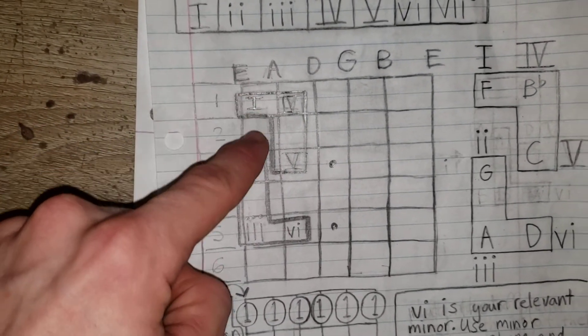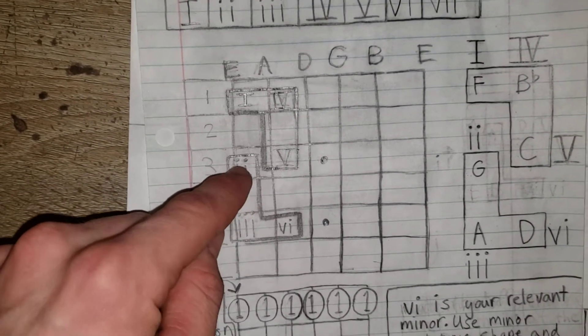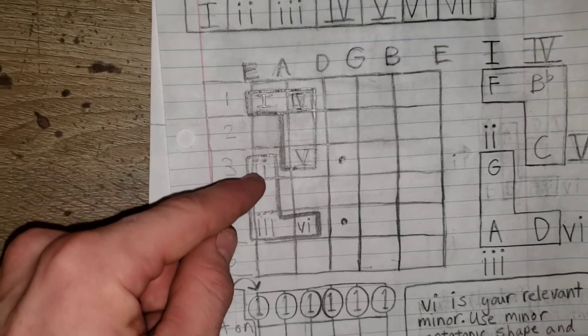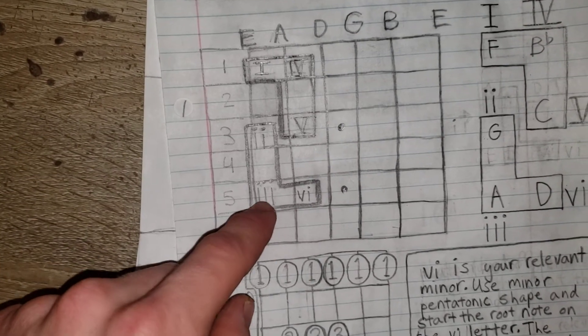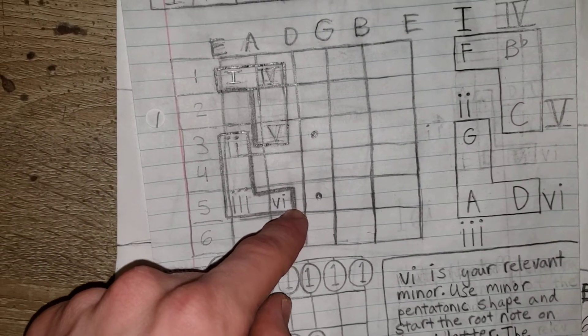So you're playing any note, and you go down two frets, you have your 2. You go down another two, you have your 3. You go over one, and you have your 6.